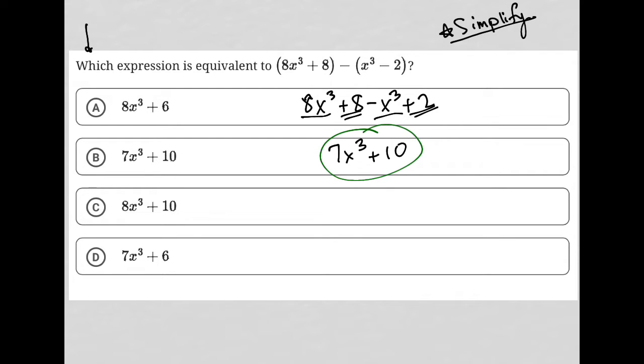And that would go along with choice B here, 7x³ + 10.